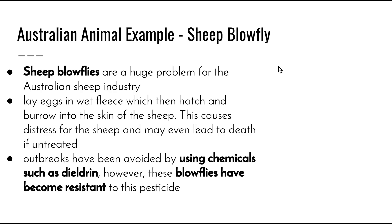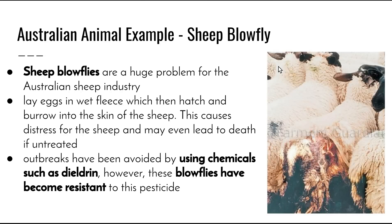An Australian animal example of a change in chemical conditions is the Australian sheep blowfly, which is a major problem for the sheep industry. Female flies lay their eggs in wounds or wet fleece in the sheep, and the maggots hatch from the eggs, burrow into the skin, and can cause distress or even death if left untreated. Chemicals such as dieldrin or organophosphates have been used to prevent outbreaks, but resistance to these insecticides has also developed through natural selection. Because flies reproduce so quickly, resistant flies pass this trait on to their offspring rapidly, leading to bigger populations of resistant flies.